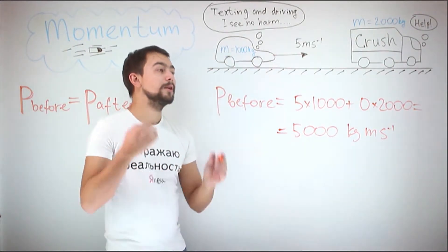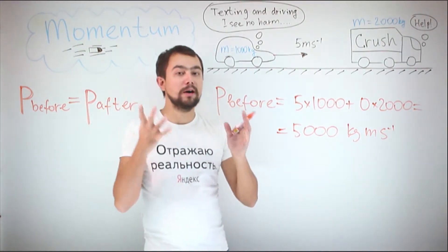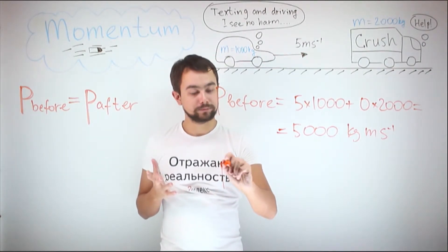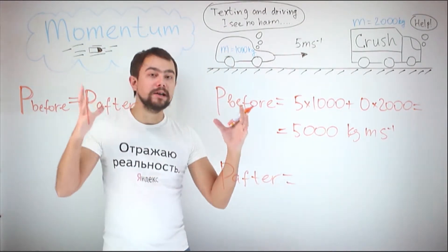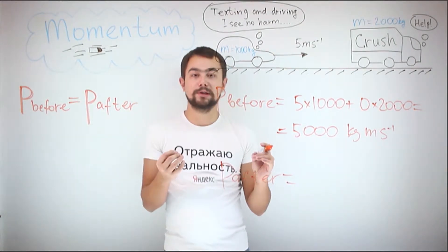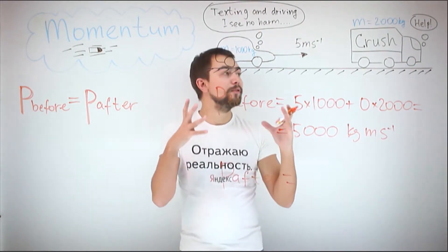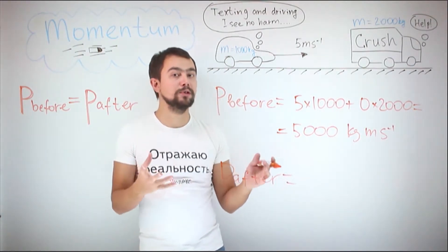Now, the total momentum after the collision. Their combined mass is 3,000 kilograms and they are moving with velocity u, which we do not know.